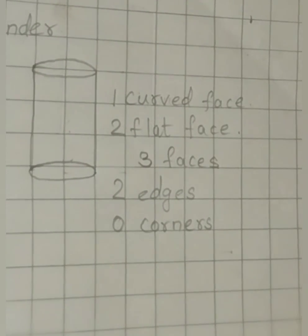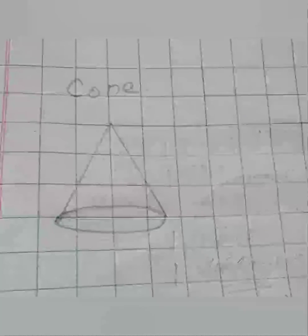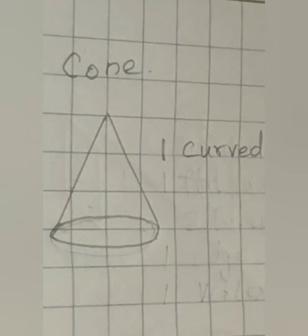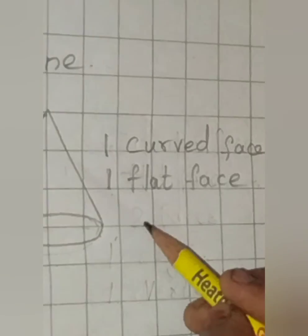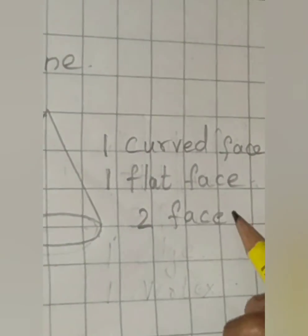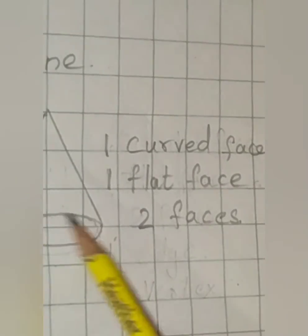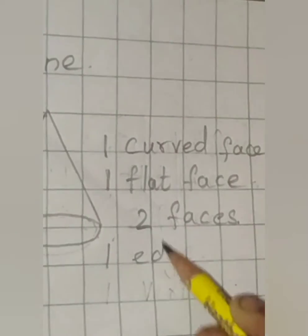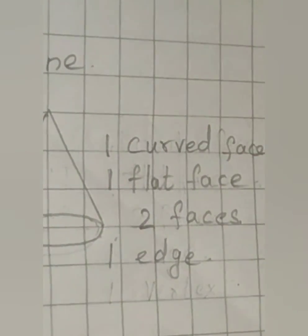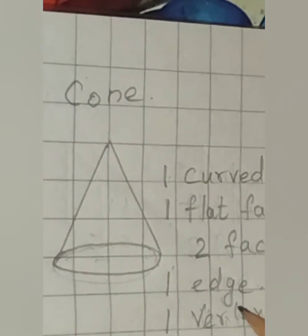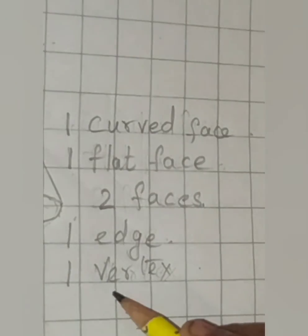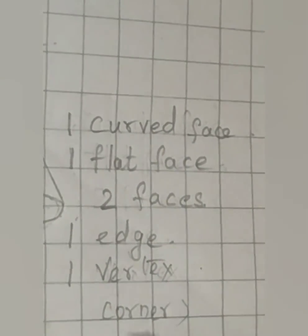Now let us move to cone. I have drawn a cone already for you. A cone has one curved face — the upper part is the curved face, and the lower part is the circular flat face, so one flat face. Totally we have two faces for a cone. The place where the faces meet is the edge, so it has only one edge. This point is the corner or vertex — for a cone, we usually say only vertex, not corner.